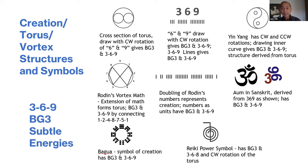Many of you will know about Rodin's vortex math and know that extensions of that math form the torus. There are nine numbers surrounding a circle. If you double the numbers—one plus one is two, two plus two is four, etc.—and get the digital root, you get a structure.